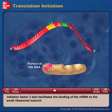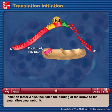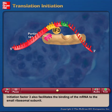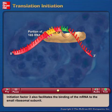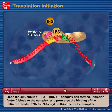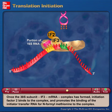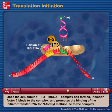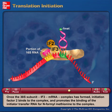Initiation factor III also facilitates the binding of the mRNA to the small ribosomal subunit. Once the 30S subunit–IF3–mRNA complex has formed, initiation factor II binds to the complex and promotes the binding of the initiator transfer RNA for N-formyl methionine to the complex.